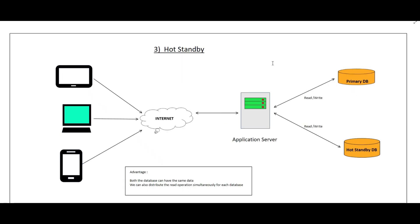The third option is hot standby. Traffic from mobile and laptop devices goes through the internet to the application server. Here we have two databases: a primary DB and a hot standby DB. Every read/write request goes to both databases simultaneously. If the primary goes down, we can route all traffic to the hot standby immediately. We can also distribute read operations between the two databases.